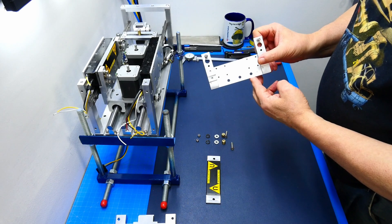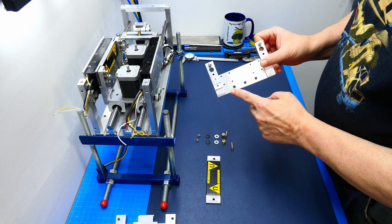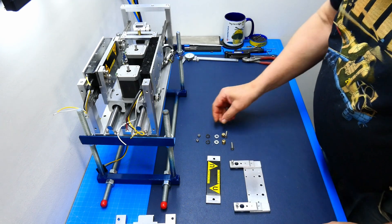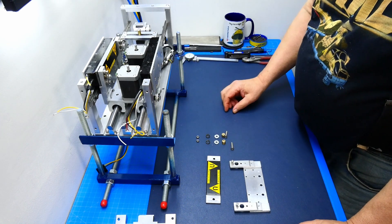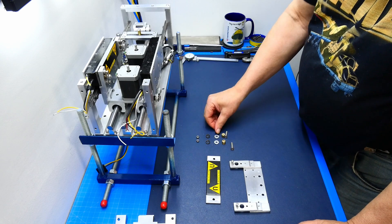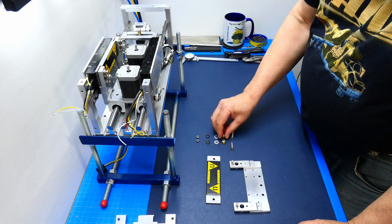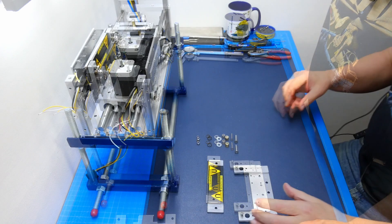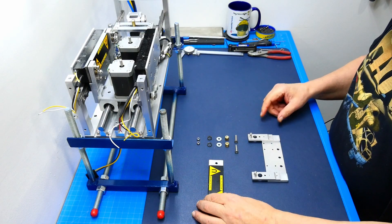So we have here the carrier which we drilled the holes out. We have two lock nuts, two springs, two washers, two bushings and two bolts. Let's get this assembled.